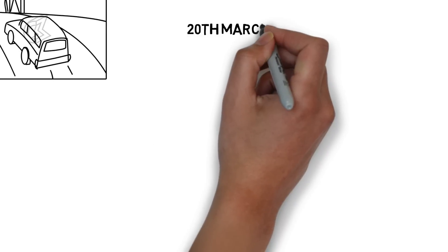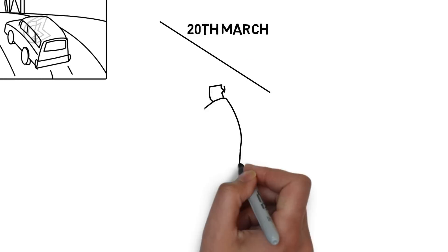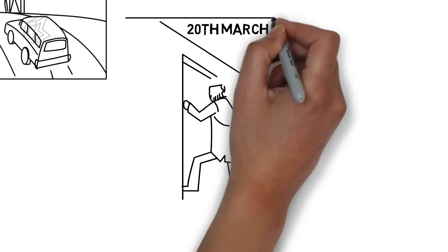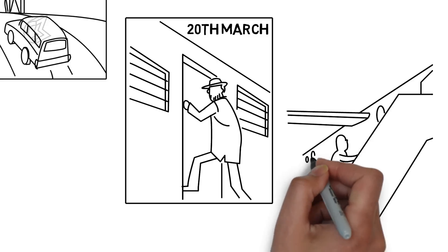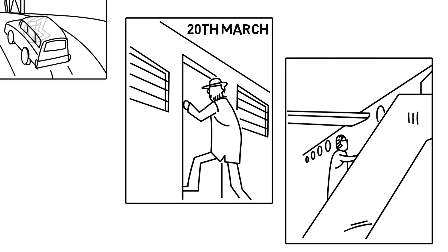On 20th March, Bose boards a train for Moscow. Netaji arrives in Moscow on the 27th and stays in the Russian capital for the night. The next day, he boards a plane for Berlin.